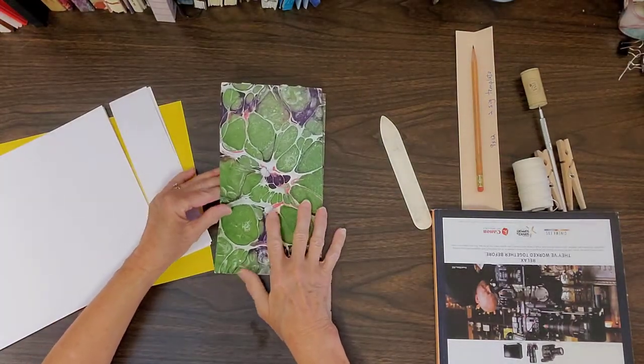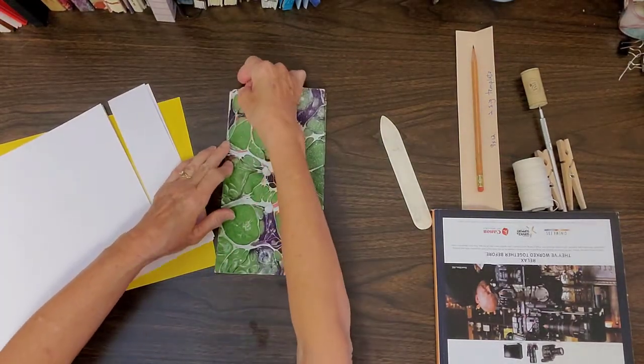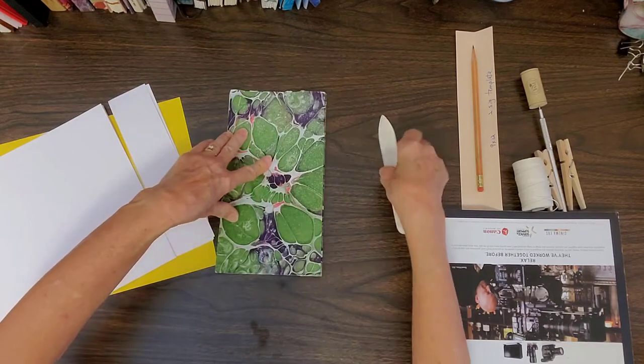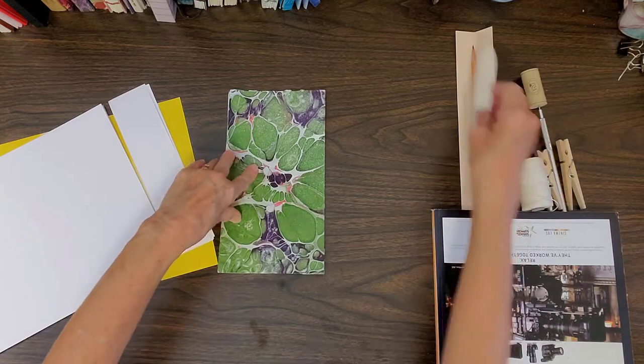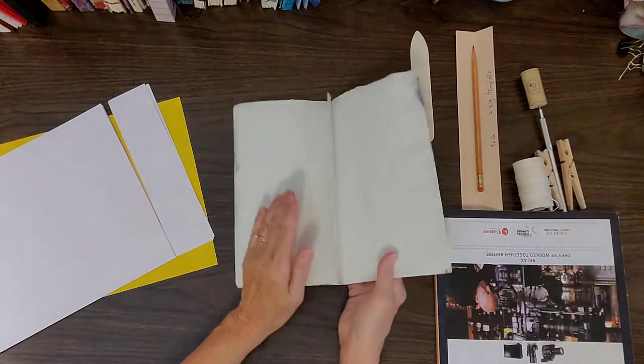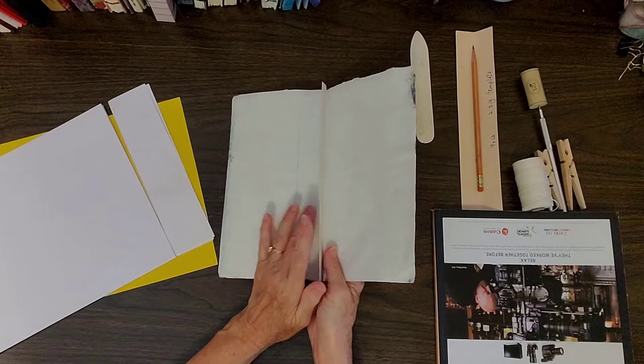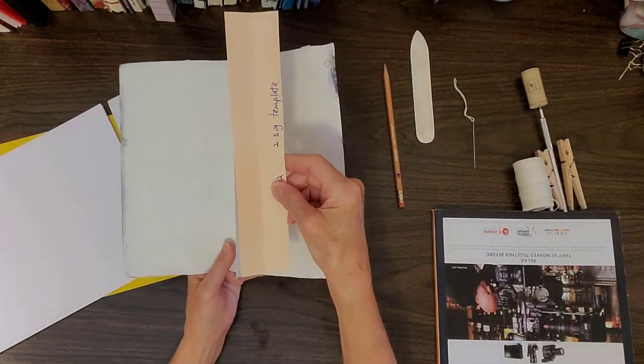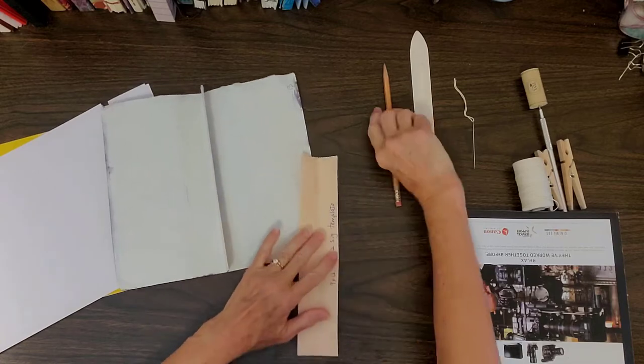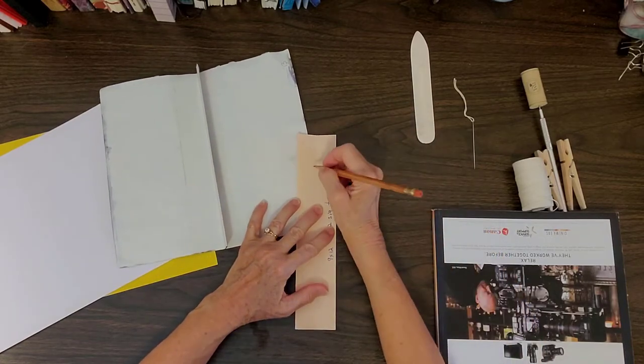Flip it over, again measuring an inch with a ruler and bone fold that crease. Now you have one paper with a seam in the middle and you are going to need a template that is the same size as your paper.